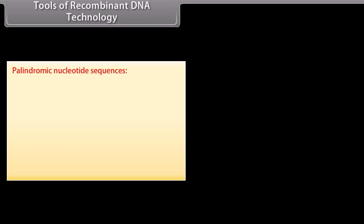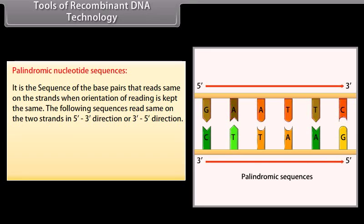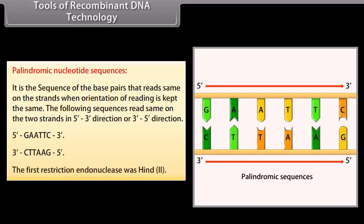Palindromic nucleotide sequences: it is the sequence of base pairs that reads the same on both strands when the orientation of reading is kept the same. The following sequence reads the same on the two strands in the 5' to 3' direction or 3' to 5' direction: 5'-G-A-A-T-T-C-3' and 3'-C-T-T-A-A-G-5'. The first restriction endonuclease was HindII.